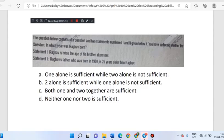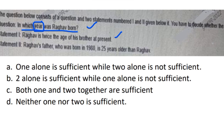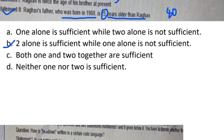The next question: a question with two statements asks in which year was Raga born. Statement one says Raga was twice the age of his brother - we cannot determine the birth year from this alone. Statement two says Raga's father was born in 1980 and is 25 years older than Raga, so we can directly calculate the year: 1980 plus 25 gives the answer. Only statement two is sufficient, so option B is correct.